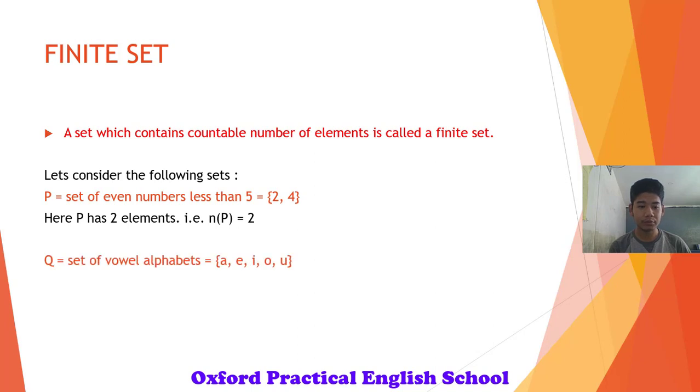Set Q, set of vowel alphabets. They are A, E, I, O, U. Set Q has 5 elements and we can count them and hence it is also a finite set. Therefore, both P and Q are finite sets.